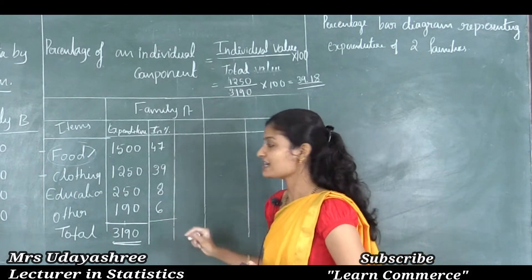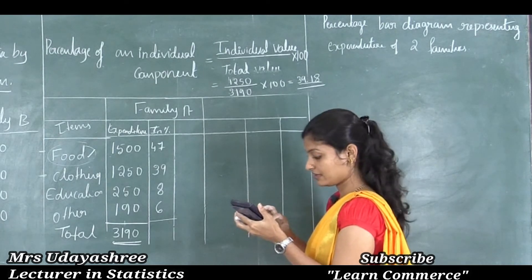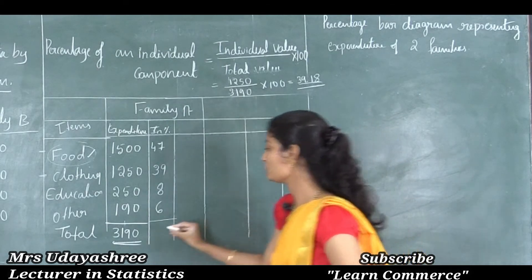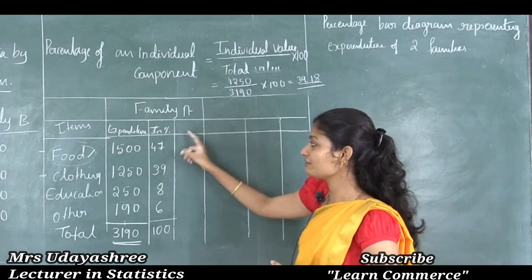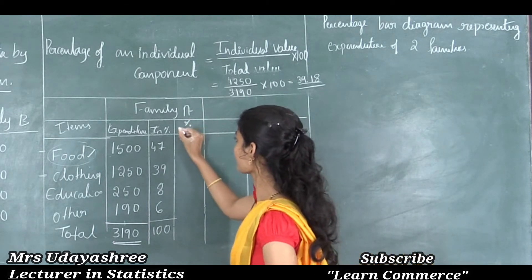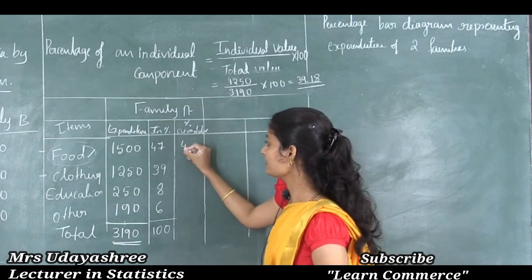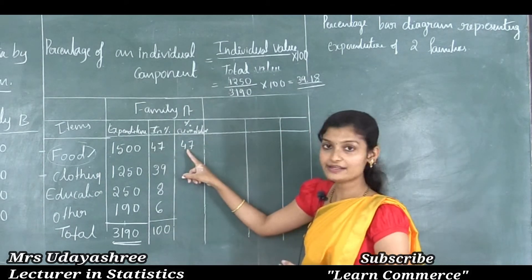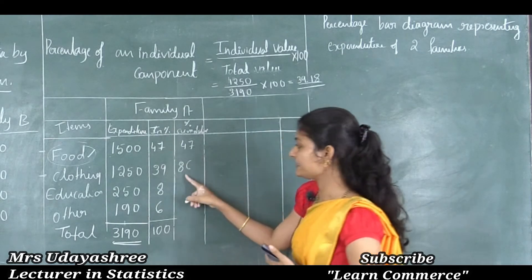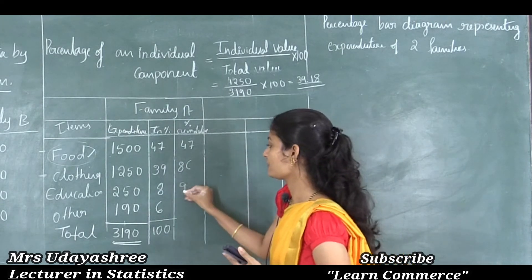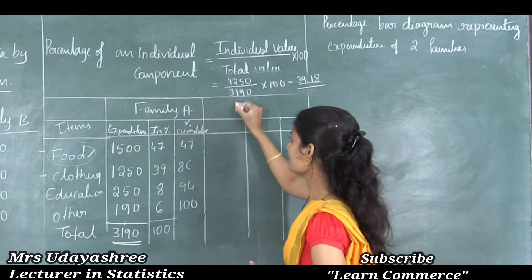Let me verify: 47 + 39 + 8 + 6 = 100. The total is 100, so the process is correct. For easy drawing of the percentage bar diagram, I will find the cumulative percentages: 47, then 47 + 39 = 86, then 86 + 8 = 94, then 94 + 6 = 100. This is all about family A.